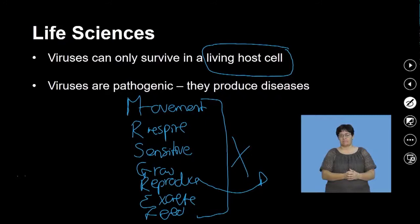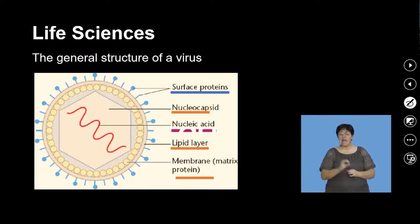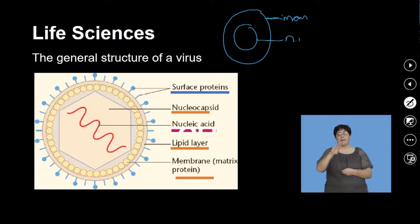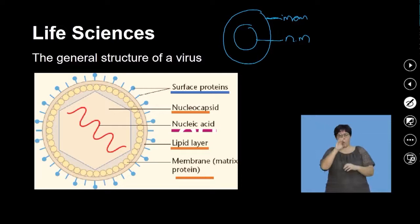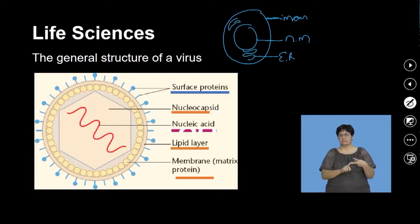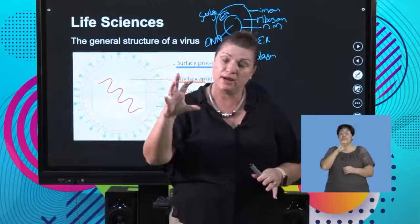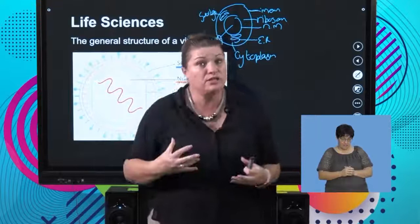We've looked at the concept that a virus is acellular. I'm sure you've done what a cell is. When we look at the concept of a cell, I'm going to draw one quickly. A cell had a cell membrane, a nuclear membrane, and then a whole host of organelles: the ER, the Golgi apparatus, cytoplasm, a ribosome, and in the middle, DNA — the chromatin network. The living contents are the cell membrane, the cytoplasm, and the organelles inside.